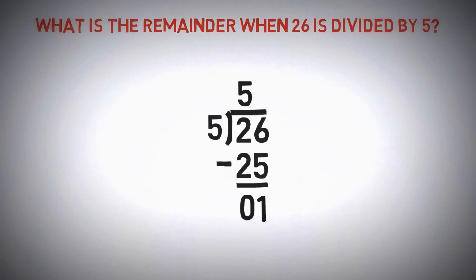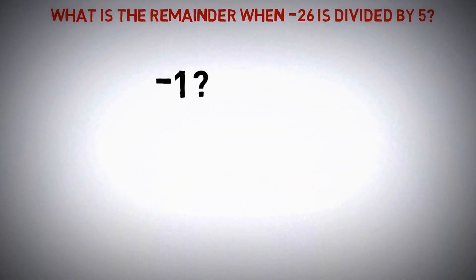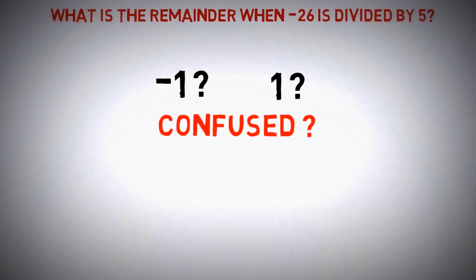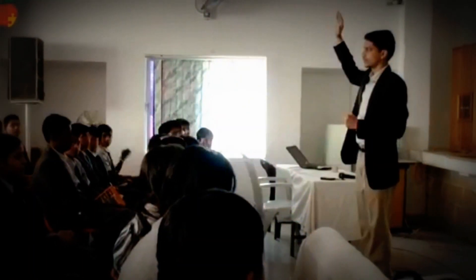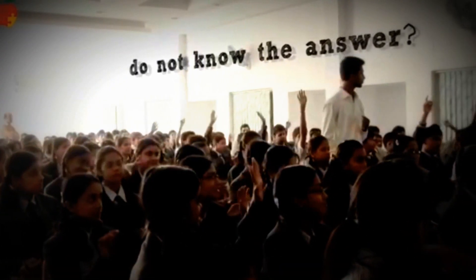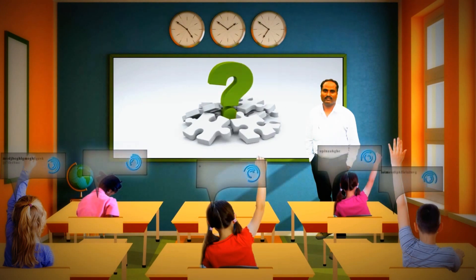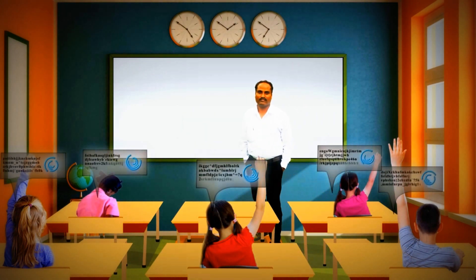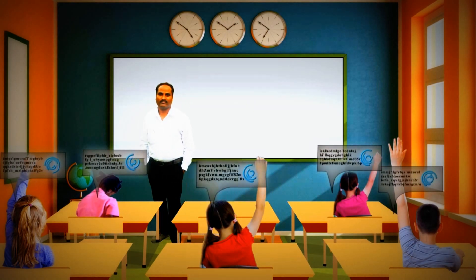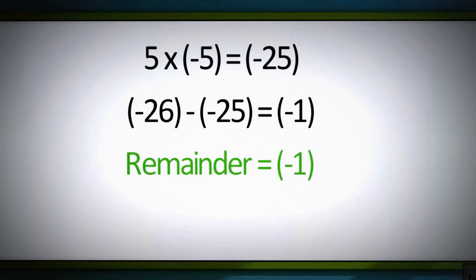Let's twist the same problem a little. What if minus 26 is divided by 5? What will be the remainder then? Minus 1? 1? Confused? Well, we experimented with a sample set of students and tried to study where they get stuck with this problem and why. We realized that most people get stuck because all of them have memorized the method of division but do not have a visual representation of the method. We intuitively take minus 5 as quotient and hence minus 1 as remainder, which is wrong.